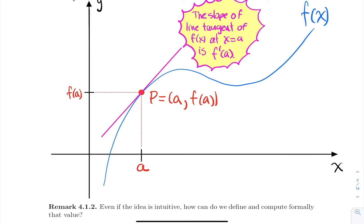This is just an intuitive definition; we're not making anything precise here. The slope of the tangent line is what we call the derivative of f(x) at x equal a, denoted f prime of a. That prime symbol is kind of like an homage — it's like the tangent line on f. But even if the idea is initially very visual, how can we define and then compute this formally? That's the goal of this chapter.